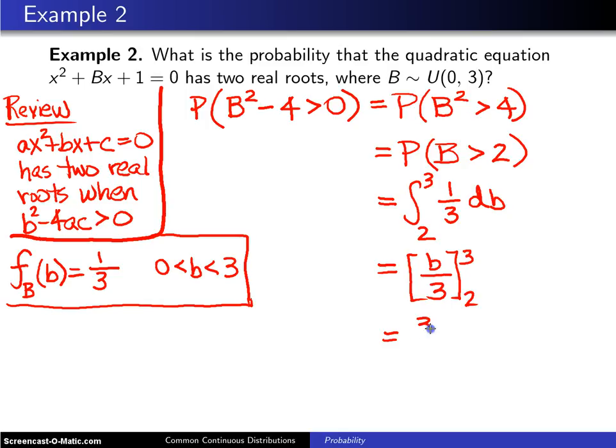So we get 3 minus 2 divided by 3, and that will be one-third. So the probability that this quadratic equation with a random coefficient in it has two real roots is equal to one-third.